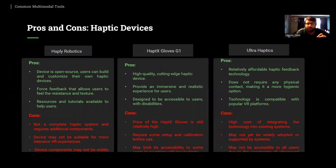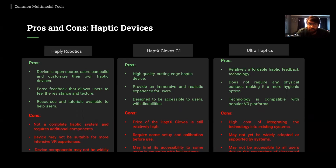This slide also covers the pros and cons of haptic devices. When selecting a haptic device for use with AR/VR, we need to check the pros and cons and select the device according to our application. HaploBotics is an open-source device; users can build and customize their own haptic devices, and it provides force feedback allowing users to feel resistance and texture. Resources and tutorials are available to help users. However, it is not a complete haptic system and requires additional components, may not be suitable for intensive VR experiences, and device components may not be widely available.